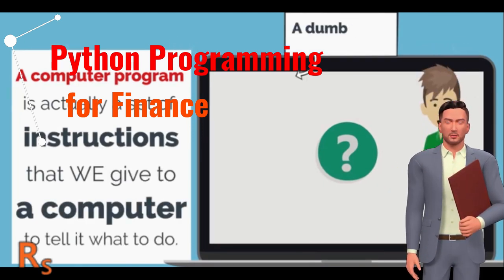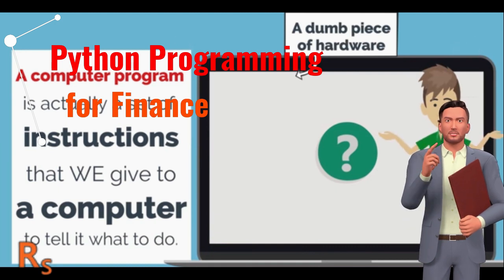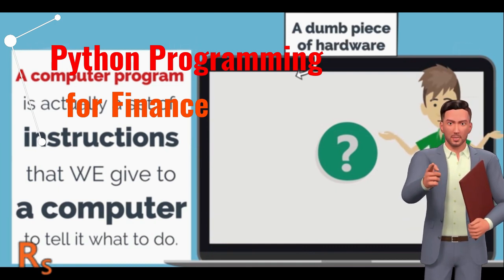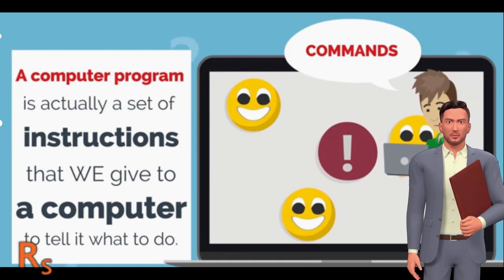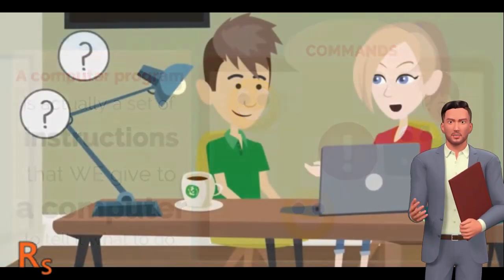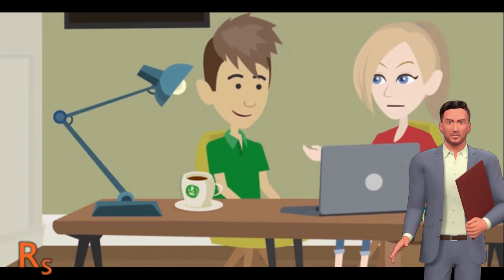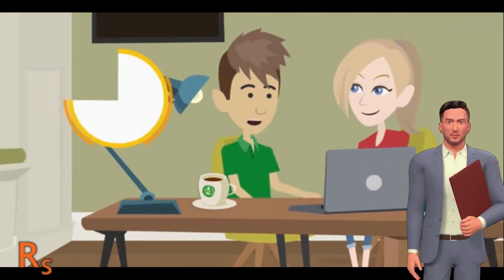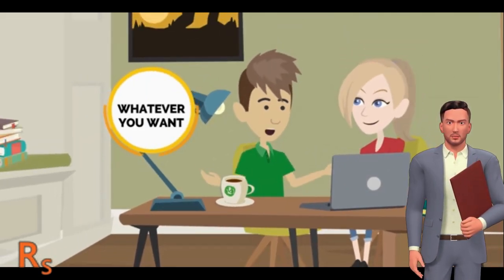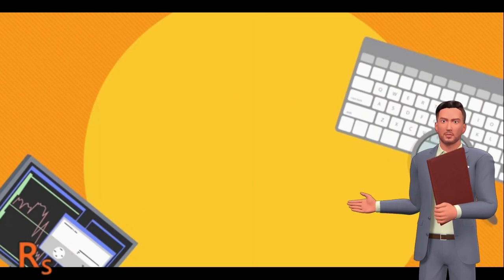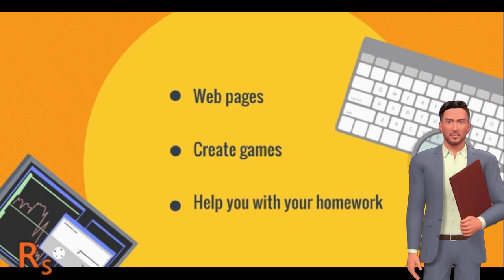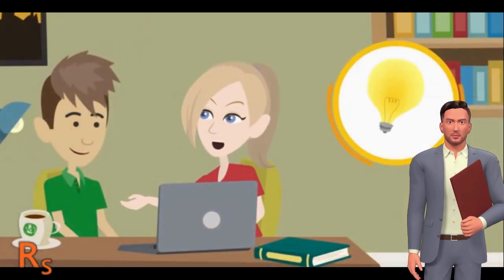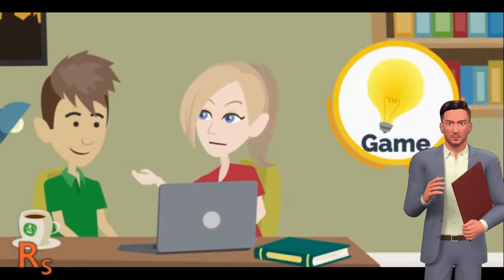Part one: Python programming fundamentals. This covers beginner Python programming fundamentals including concepts such as data types, variable assignments, loops, conditional statements, functions, and file operations. This section also covers key Python libraries for data science such as NumPy and Pandas, as well as data visualization tools such as Matplotlib, Seaborn, Plotly, and Bokeh.